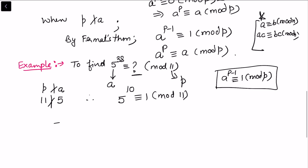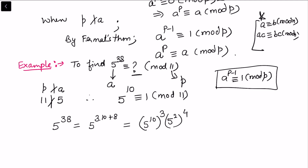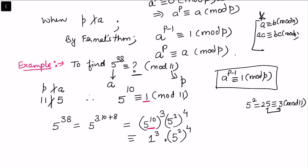We want 5^38. Write 38 = 3 × 10 + 8, so 5^38 = (5^10)^3 × 5^8. We know 5^10 ≡ 1 (mod 11), so this becomes 1^3 × 5^8. Now 5^8 = (5^2)^4. Since 5^2 = 25 and 25 ≡ 3 (mod 11) — because 25 - 3 = 22, which is divisible by 11 — we get (5^2)^4 ≡ 3^4 (mod 11).